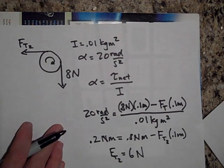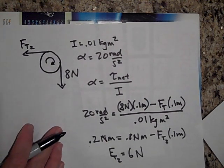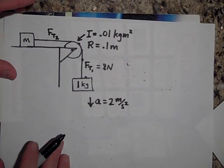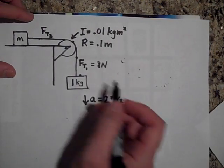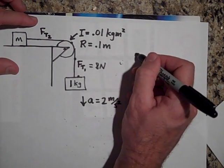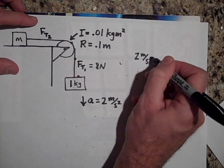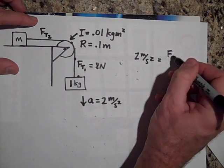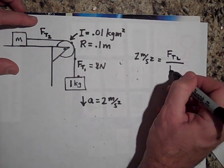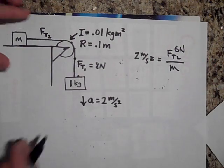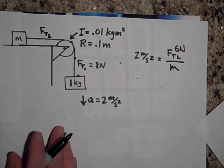Finally, can you give me the mass on top of the table? The mass on top of the table has only one force on it, so acceleration equals FT2 over M. FT2 is six newtons, so you can solve for the mass.